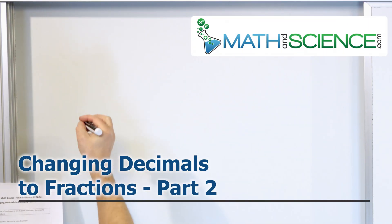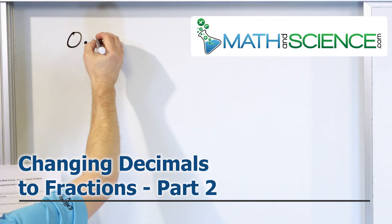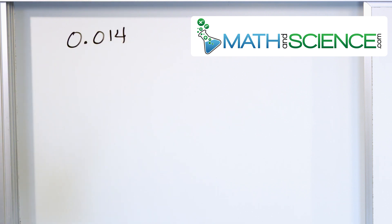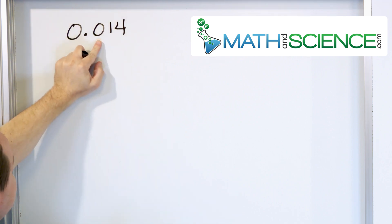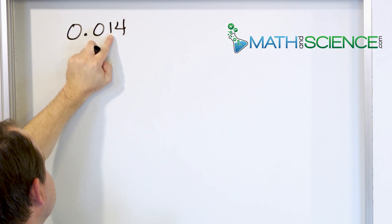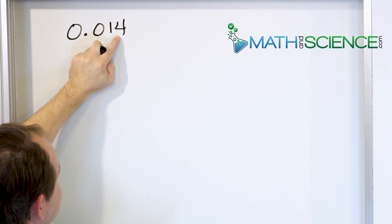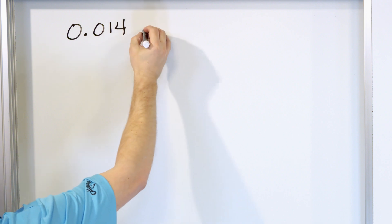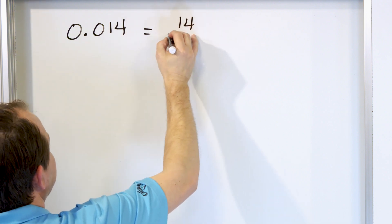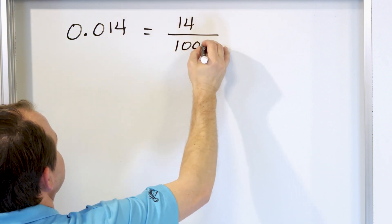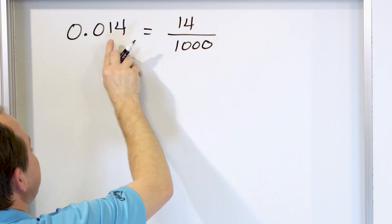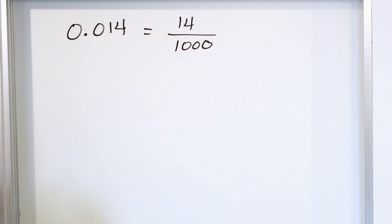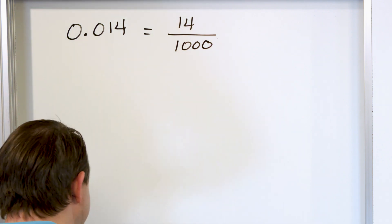For our first example, let's say we have the decimal 0.014 and we want to convert that to a fraction. We have nothing in the tenths, one in the hundredths, and four in the thousandths. But as a whole, we have 14 in the farthest position, which is the thousandths position. So we write this as 14 one-thousandths. Read both digits together in the farthest position — the thousandths. So we have 14 out of 1,000.